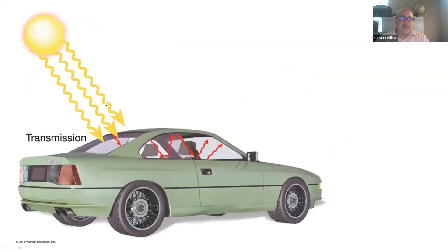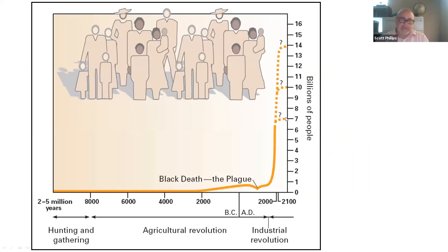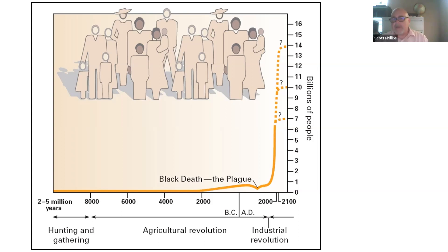One thing I noted earlier is that we have question marks about where the population will land. While the population is growing rapidly right now, it's expected to level off at some point, probably around 10 or 11 billion people, and then population growth will slow because birth rates will slow down. But until our population growth really starts to slow down dramatically, we have to be concerned about resources — protecting our food supply while changes like climate change are happening around us.